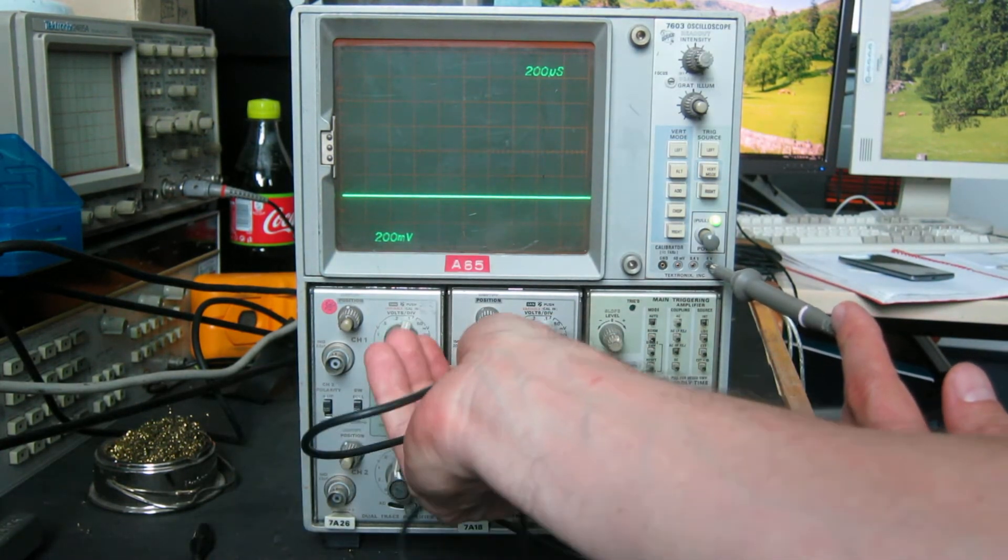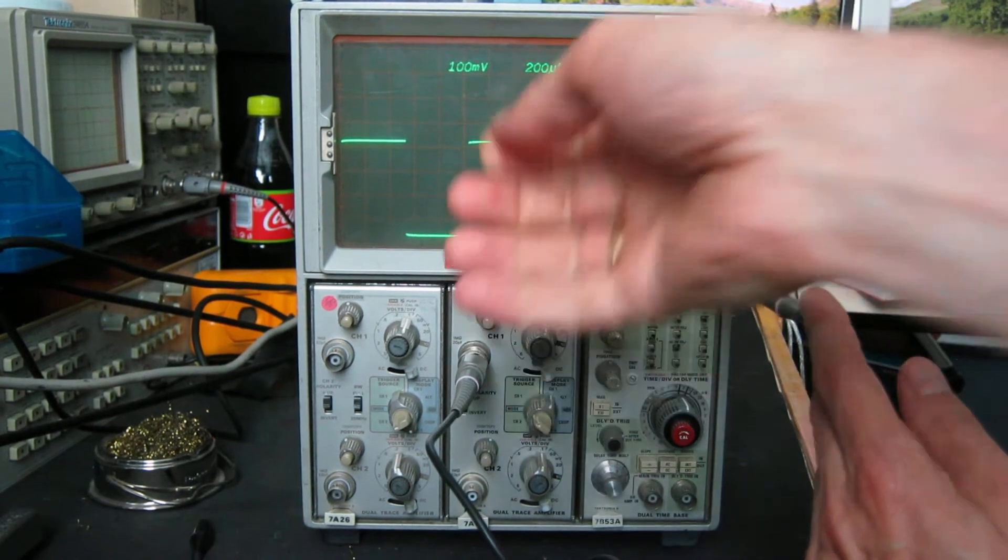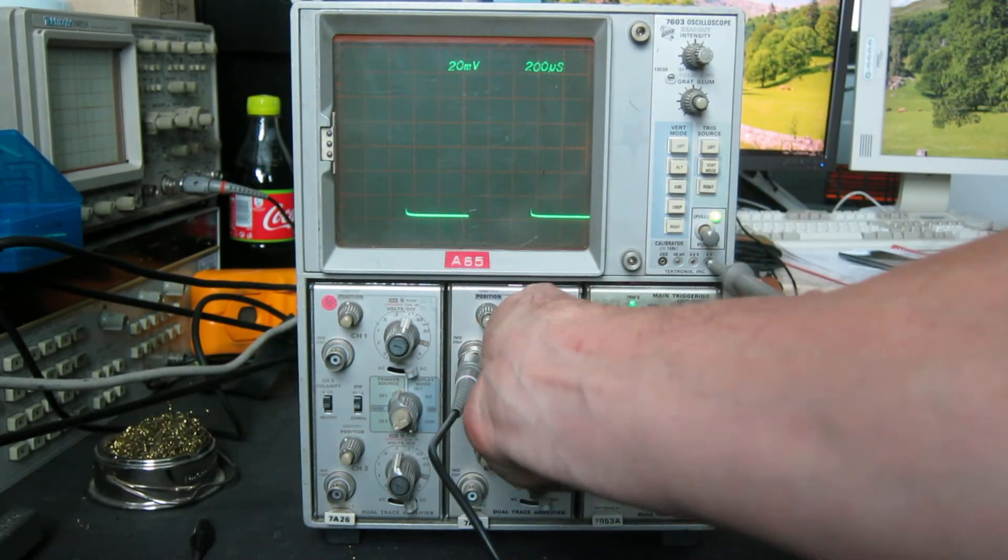We'll check out channel 3. We need to change trigger source to the right, vertical mode to the right, and here we have channel 3's all good.